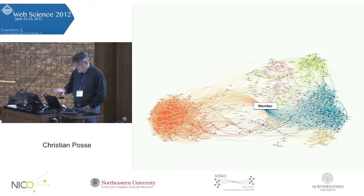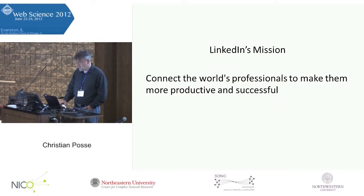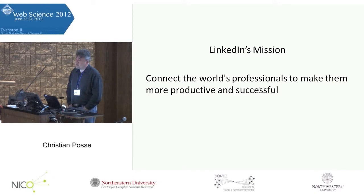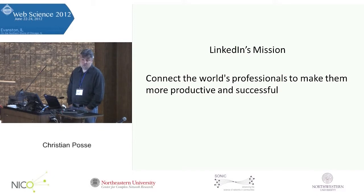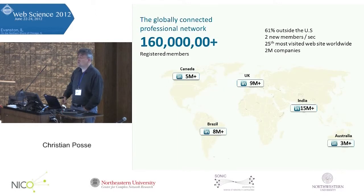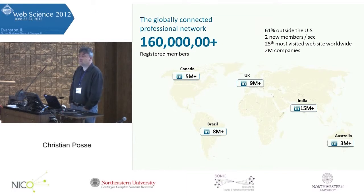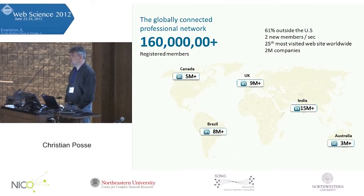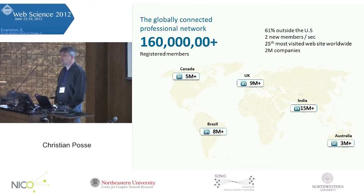That individual-centric vision has driven the whole way we think about how to build a platform to support professional social networks. We can summarize it through our mission: to connect the world's professionals and to make them more productive and successful. So how do we do that? First, you have to connect the world's professionals — that's where the big numbers come from. LinkedIn today has around 160 million members, all self-registered.